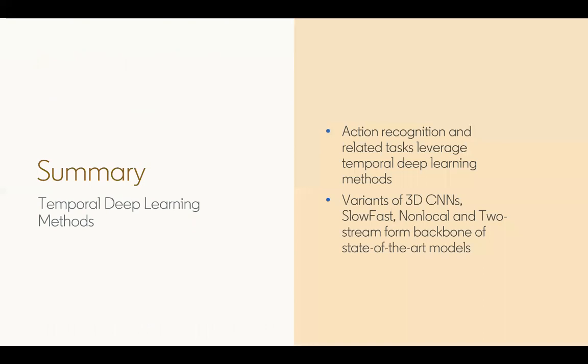To summarize, a variety of temporal deep learning methods exist for action recognition. Variants of 3D convolutions, SlowFast, non-local, and two-stream networks form the backbone of many of the state-of-the-art models.